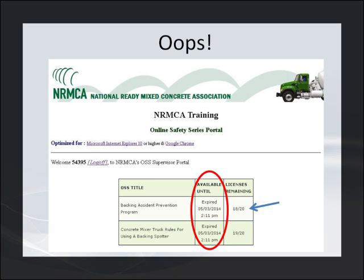What if you have a participant who logs on after the streaming period has ended? The participant will get a message showing he does not have access to the learning site because the time has expired. This will happen even if all the licenses were not used in the 30-day period — even though three licenses were not used, the time has expired, so this 18th person logging on no longer has access.